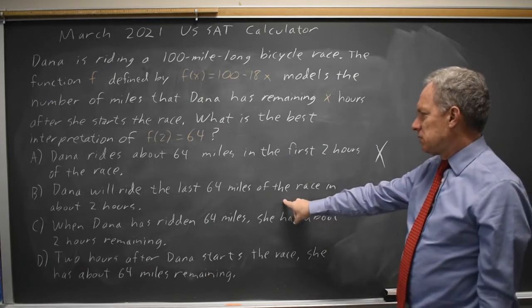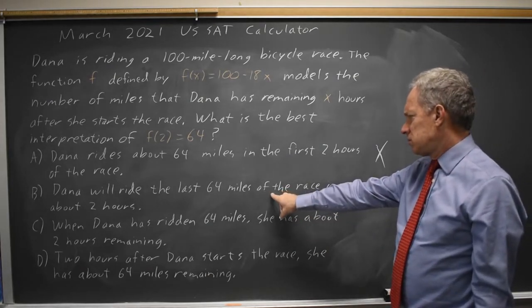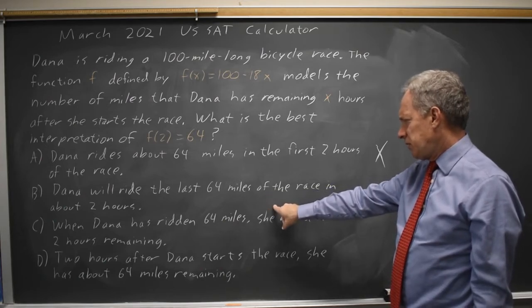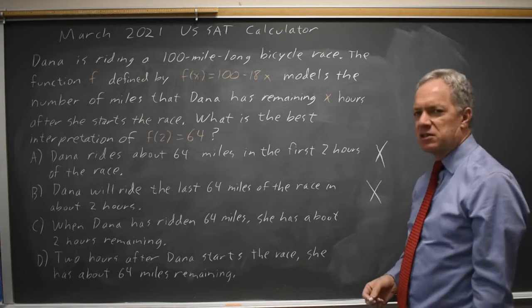In B, 64 miles remaining in about 2 hours, that's hours remaining, not hours since she started, so that's not correct.